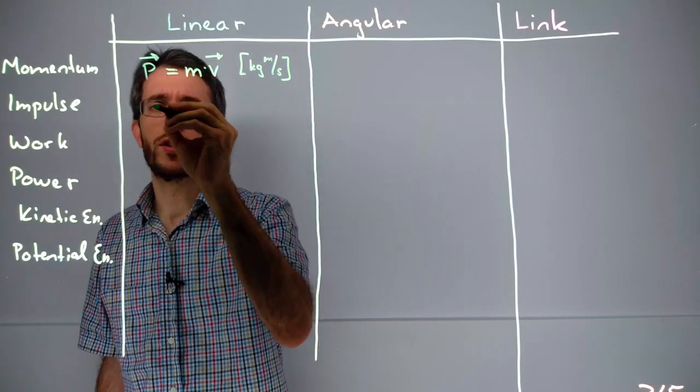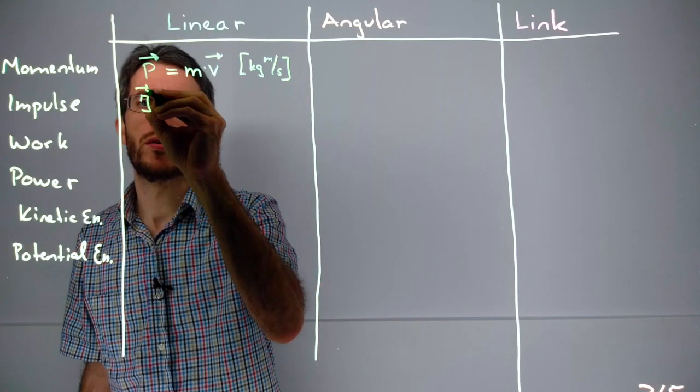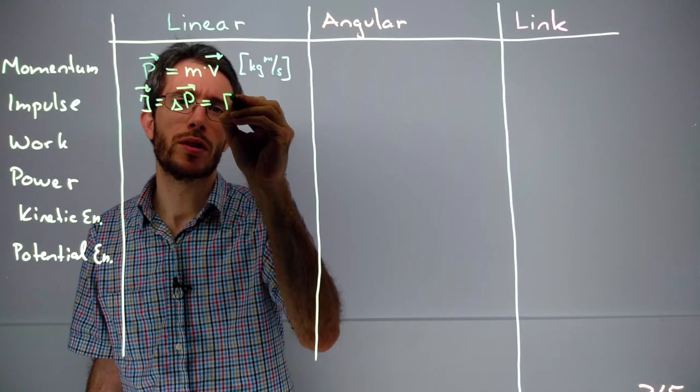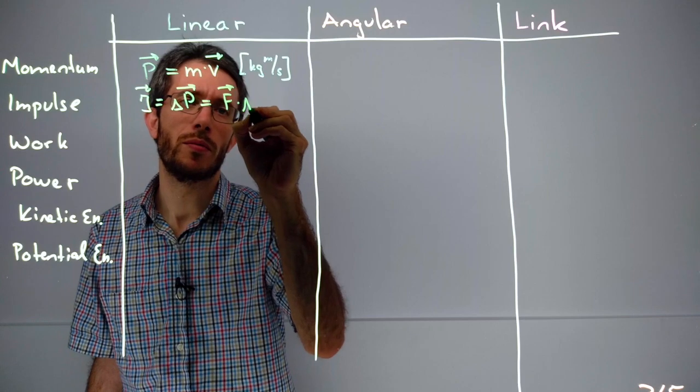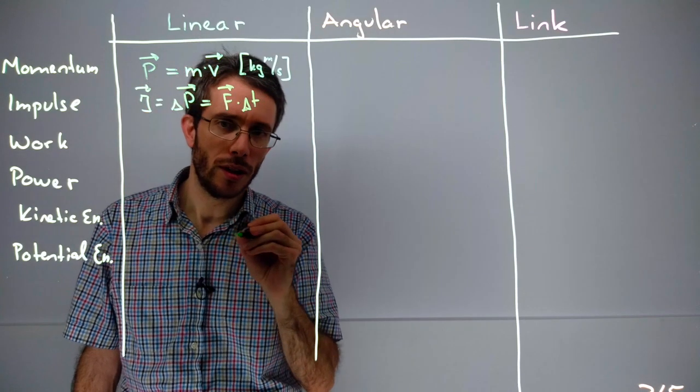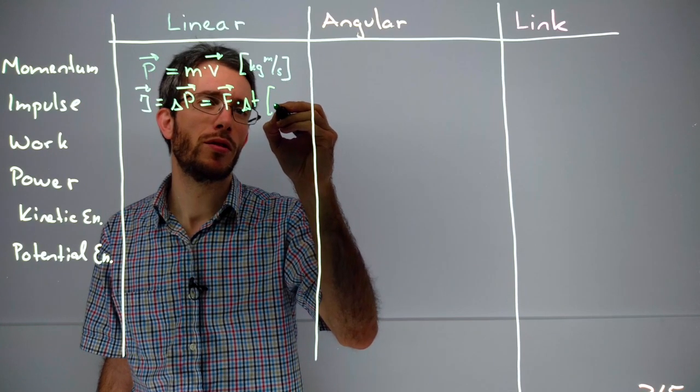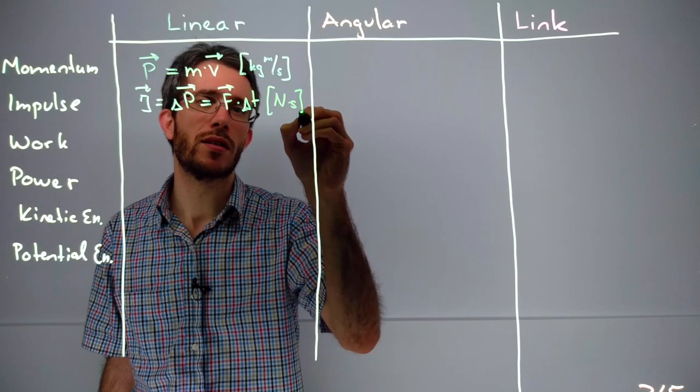Impulse was the change in momentum, which was force times time. And its unit is the same, kilograms meters per second, or newtons times seconds. That's the same thing.